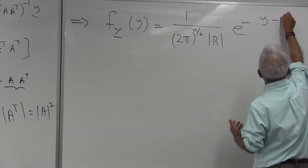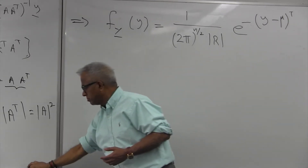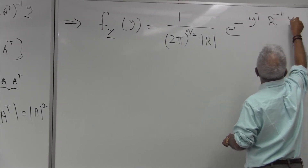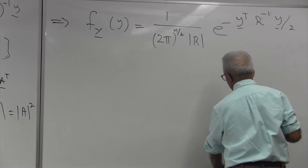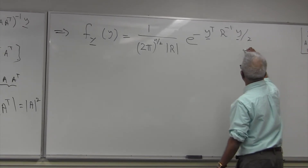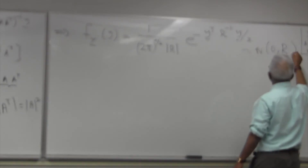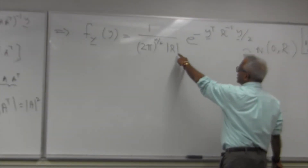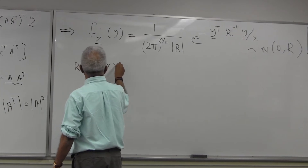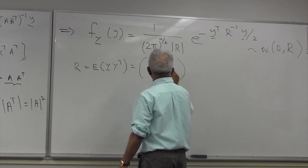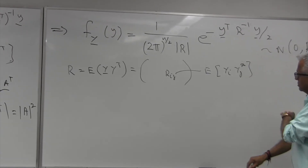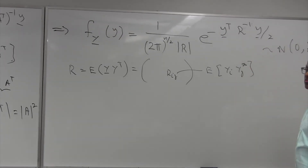Of course, if y has some nonzero mean, it will appear in the exponent. The entry R_{ij} means E[y_i y_j]. This is the structure of a multinomial Gaussian. The matrix R here is the expected value of the vector y times y^T, and its (i,j) entry is E[y_i y_j].